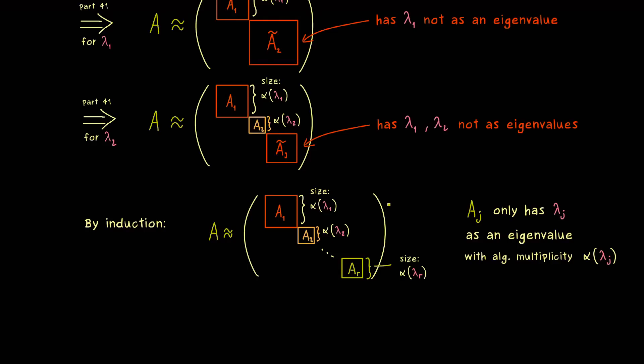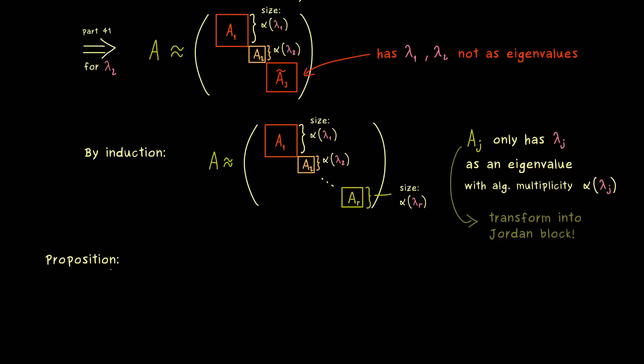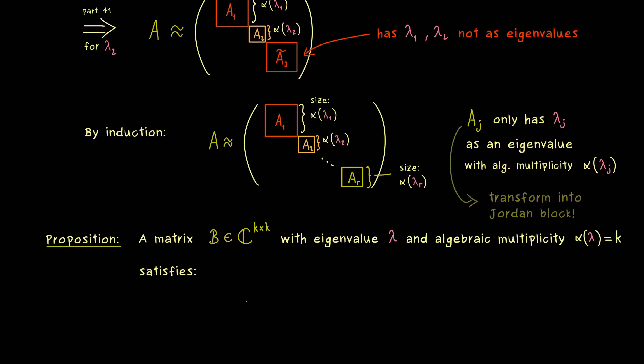Therefore, the only thing we have to show is that such a block matrix here can be transformed into a standard Jordan block. Indeed, this is now the last step and the topic of this video. So let's put this important transformation into a Jordan block in a proposition. And in order to keep the whole thing clean, let's call this block matrix simply B. And moreover, we can fix the size as k times k. So this implies that the only eigenvalue λ of B has algebraic multiplicity of k. So this is the setup and there you see all the blocks from before are covered.